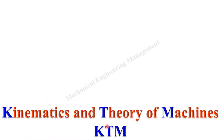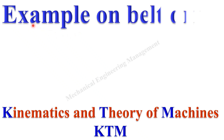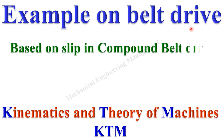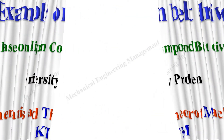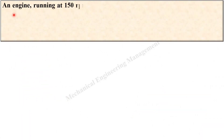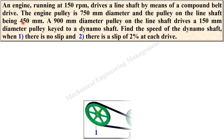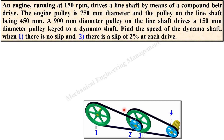Welcome to my kinematics and theory of machines (KTM) video playlist. Today we are going to discuss an example on belt drive — specifically a problem based on slip in a compound belt drive. Let us see first of all the description of the given problem. The figure is not actually given to you, but I have put it here to help understand the description of the given problem.